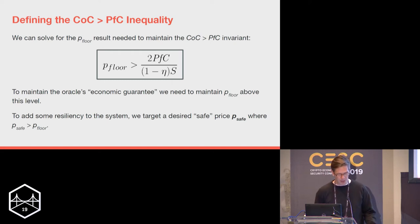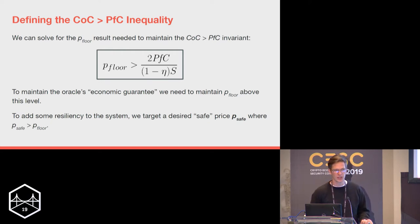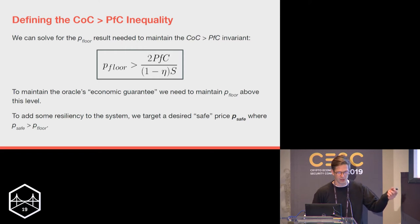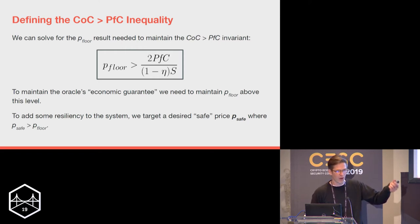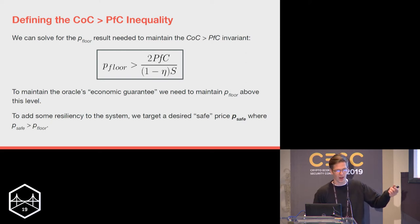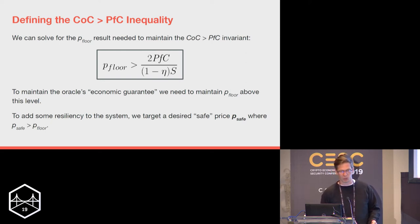In the paper we add the concept of a safe price — P-safe — which gives some resiliency to the system rather than a hard barrier. We define a target price that is some fraction above the floor price to keep it secure. So when you see the P-safe number in the paper, that's what we're talking about.